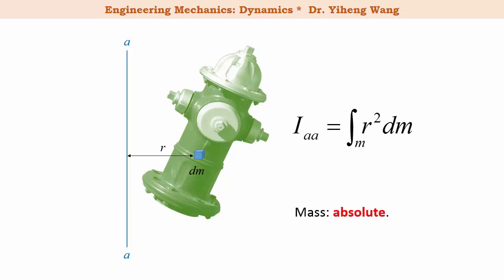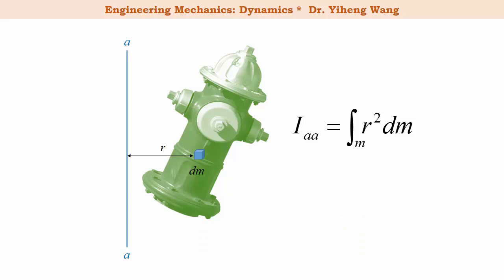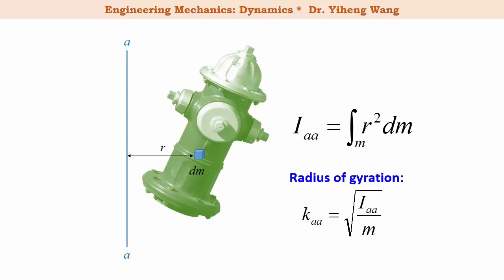Unlike mass, which is absolute, mass moment of inertia is like moment — it is always relative and differs when calculated about different axes. Once the mass moment of inertia of a rigid body about a specified axis is determined, we can calculate its radius of gyration k with respect to the same axis: k equals the square root of the mass moment of inertia divided by m, the mass of the rigid body. Radius of gyration has the unit of length. Normally this relation is used in reverse — given the radius of gyration, we quickly calculate the mass moment of inertia about the same axis.